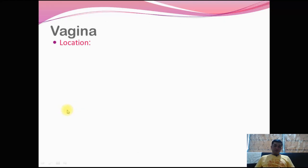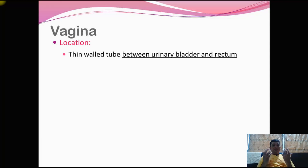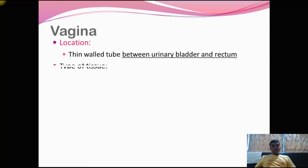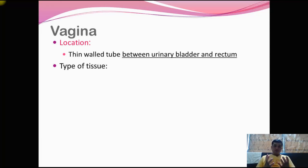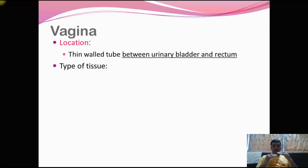Moving to the next organ: the vagina. Just like the uterus, the vagina is located between the urinary bladder and rectum. It is a thin-walled tube compared to the thick-walled uterus. Because the vaginal tract experiences continuous wear and tear due to exposure to the atmosphere, menstrual flow, and intercourse, the epithelial tissue has multiple layers.